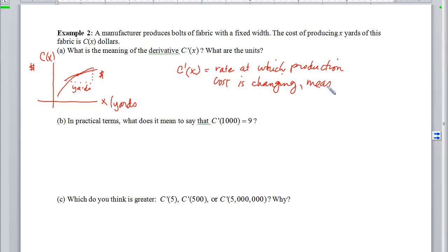So that c prime of x will be the rate at which production cost is changing, and it will be measured in dollars per yard. So in practical terms, when I say c prime of 1,000 equals 9, it means if 1,000 yards have been produced...